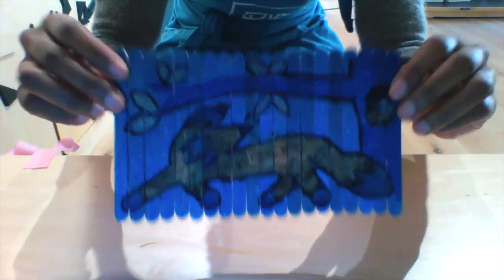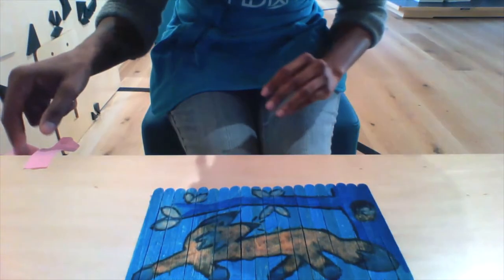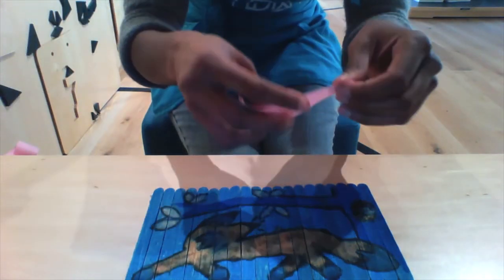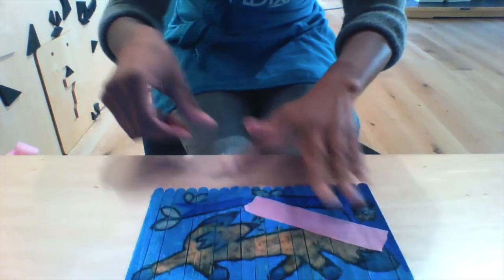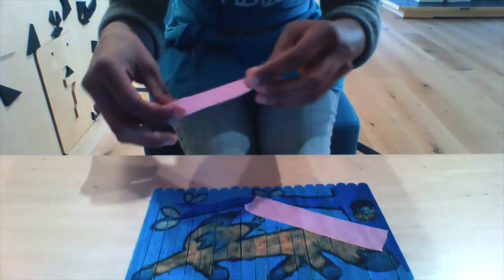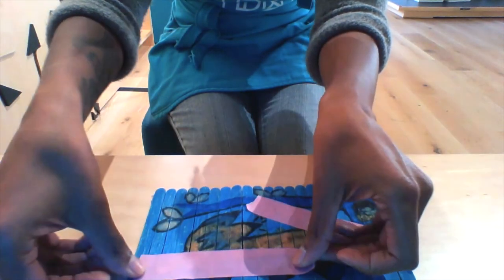And if you want to make that double-sided puzzle, then what you do is you take a few more strips of masking tape and just like before, place them across the sticks, this time on the side that we just finished coloring.